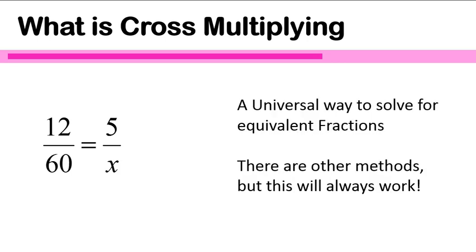Cross-multiplying is a universal way for solving equivalent fractions. So you see these two fractions, 12 over 60 equals 5 over x — they are equivalent fractions because they have that equal sign in the middle, and you can solve this using cross-multiplying. The reason I like it is because it will always work. There are other methods that are sometimes faster, but cross-multiplying will work no matter what your fraction is. It's quicker than some methods, slower than others — right about the middle as far as speed goes — but it's 100% accurate.